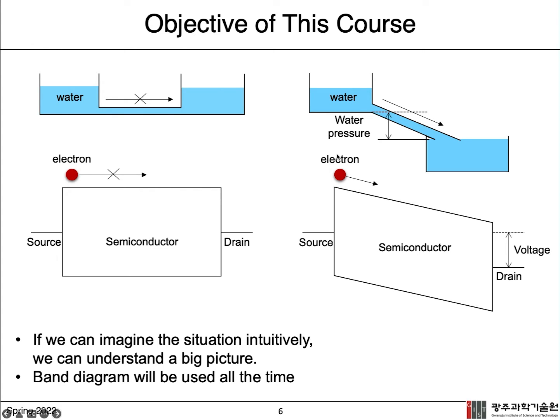But when the water pressure is here between the two bottles, this is the same situation as when voltage is applied between the source and drain electrodes. So the water or electron can move from left to right.